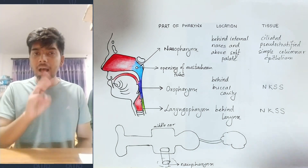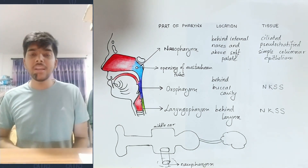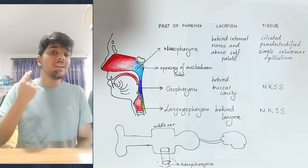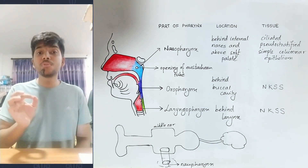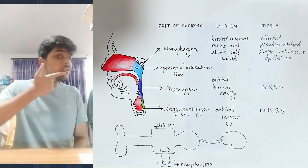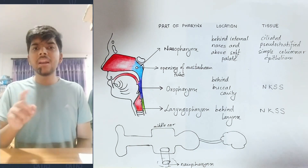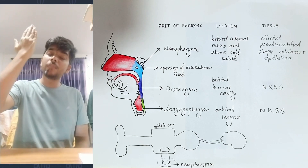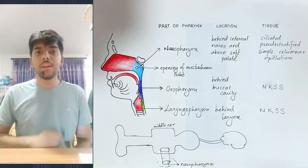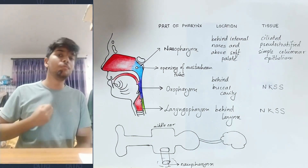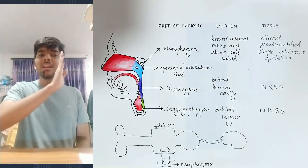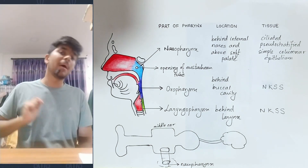In summary, the pharynx is divided into three parts: nasopharynx, oropharynx, and laryngopharynx. The nasopharynx is behind the internal nare, above the soft palate, and connects to the middle ear via the eustachian tube. The oropharynx is behind the buccal chamber. The laryngopharynx is behind the larynx. For epithelium: nasopharynx is lined by ciliated pseudo-stratified simple columnar epithelium; oropharynx and laryngopharynx are lined by non-keratinized stratified squamous epithelium. The pharynx is a common path for food and air, which then divides into the food pipe (esophagus/gullet) and the air pipe (trachea/windpipe), with the epiglottis covering the glottis during swallowing.